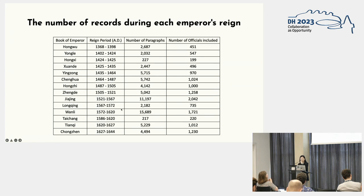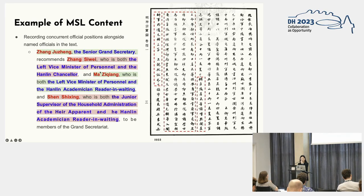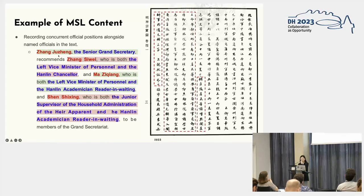The table represents the number of records during each emperor's reign, showing the number of paragraphs used for analysis. In each record, we count each pair of individuals only once, even if an individual is mentioned several times. The writing style of Ming Shilu is characterized by its inclusion of specific official positions when mentioning historical figures. As we observe from the color blocks, when referring to an official, Ming Shilu also provides information about the position held by that individual at that time.